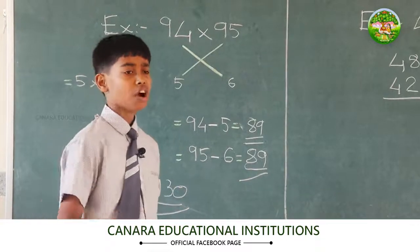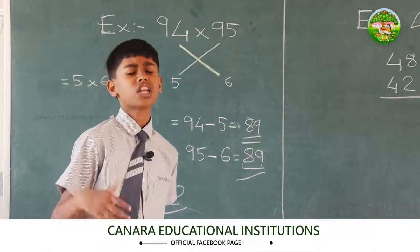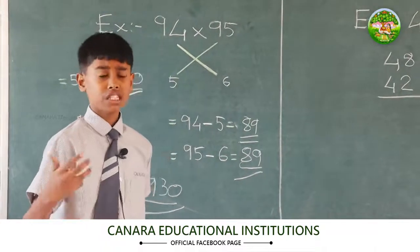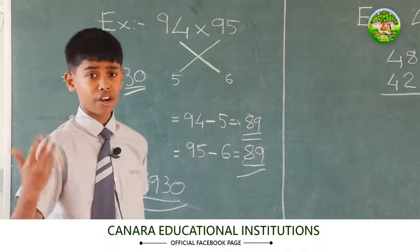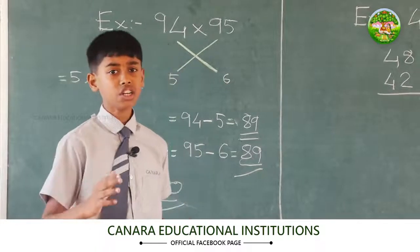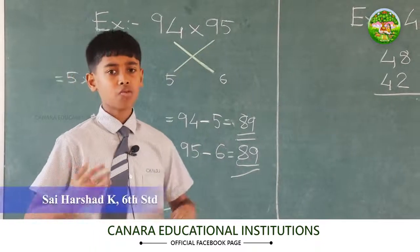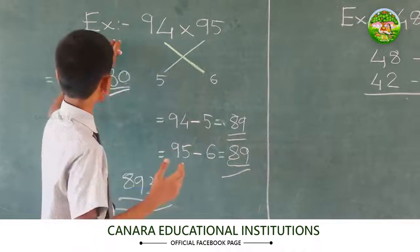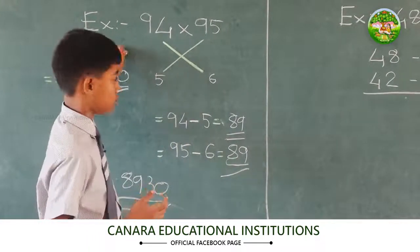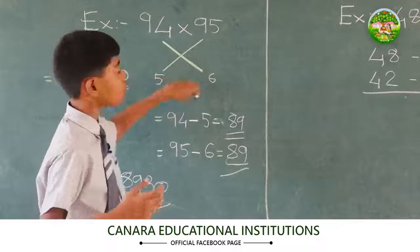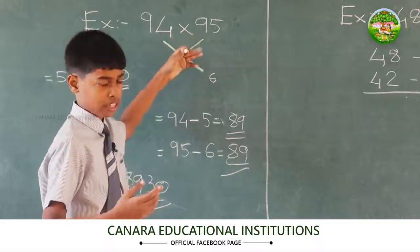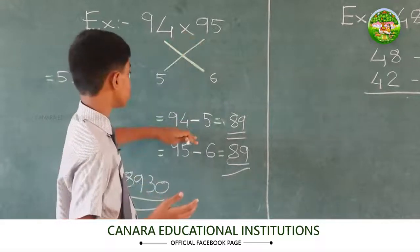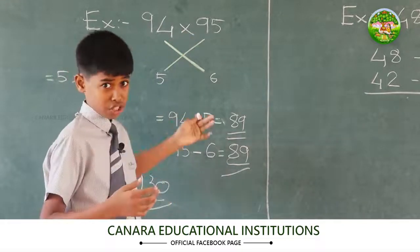If the numbers are above 100 but near to it, we follow the same method, but instead of subtracting we do addition.